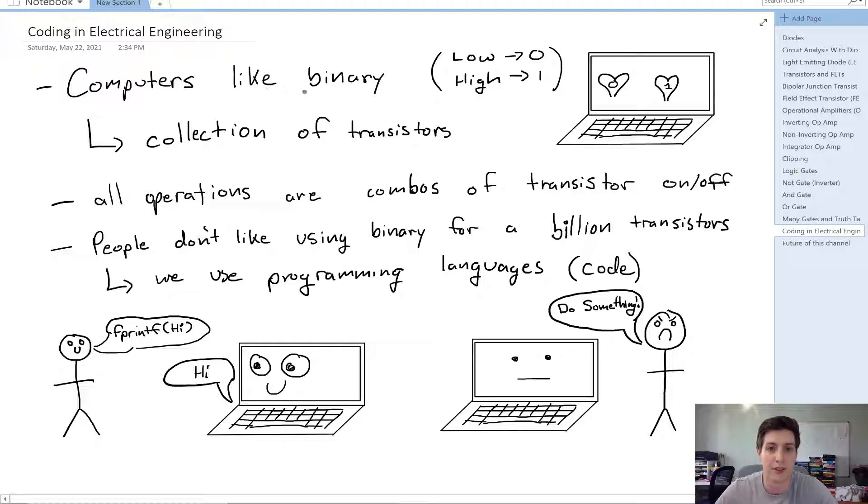Now to start it off, computers like binary. From the last video we know that a binary 0 represents a low signal, and a high signal represents a binary 1. And the computers that we have today can really be thought of as a collection of transistors. All the operations that computers can do today are unique combinations of transistors either being on or off, or in this low or high state.